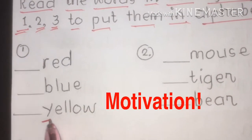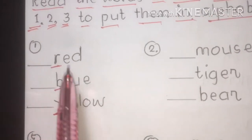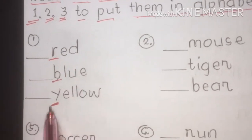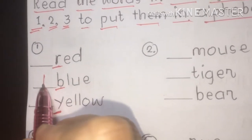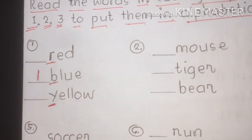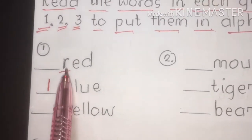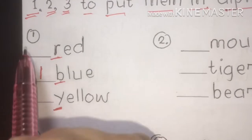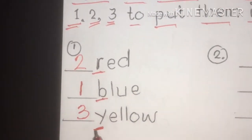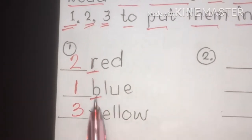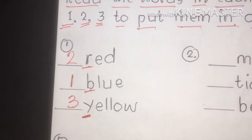Number one: red, blue, yellow. We underline the initial letters — Y, B, and R. In the alphabet, B comes first, so blue is number one. R comes before Y, so red is second and yellow is third. The answer: blue, red, yellow.